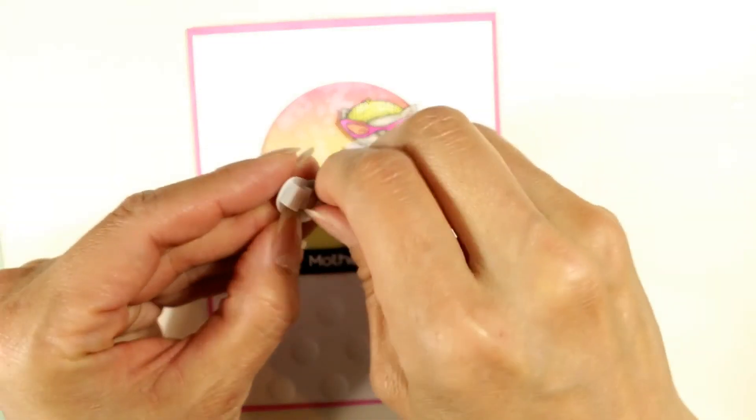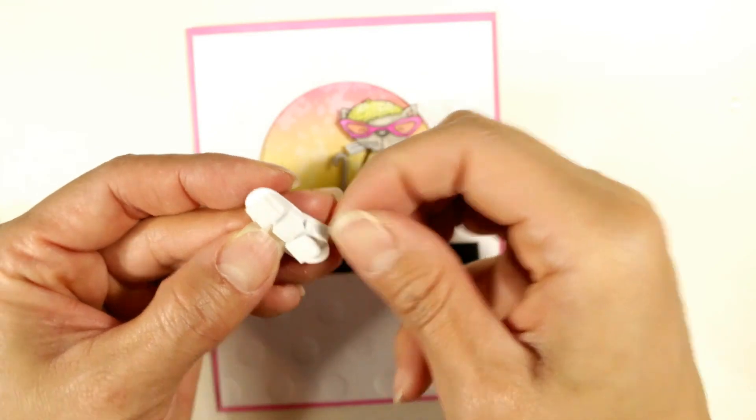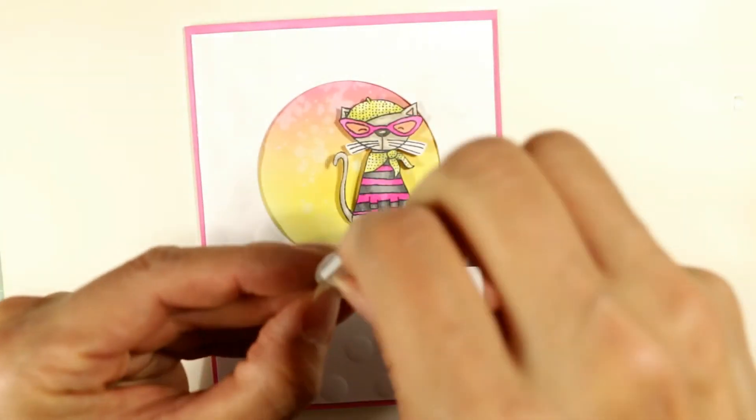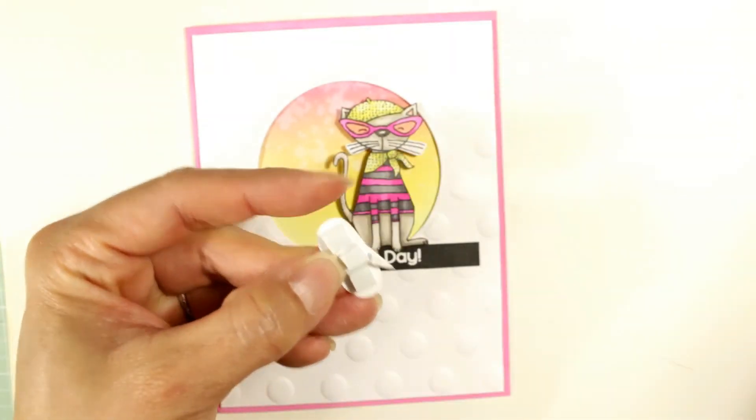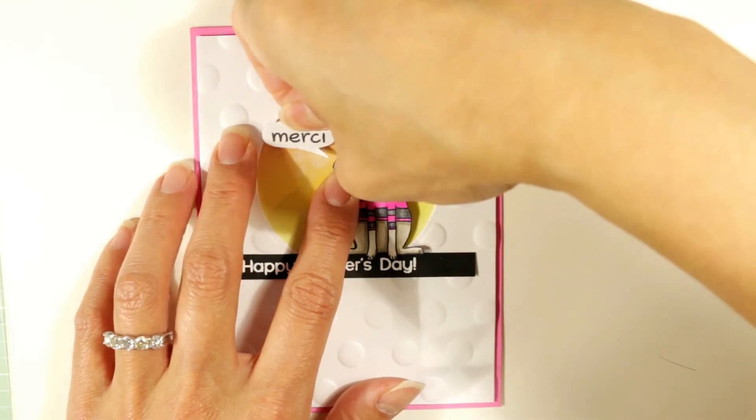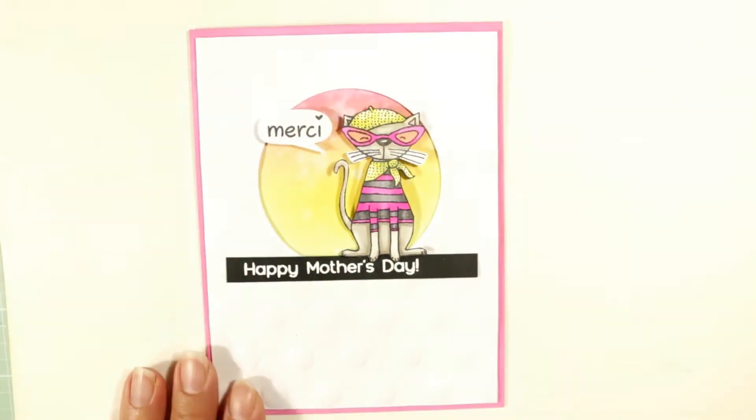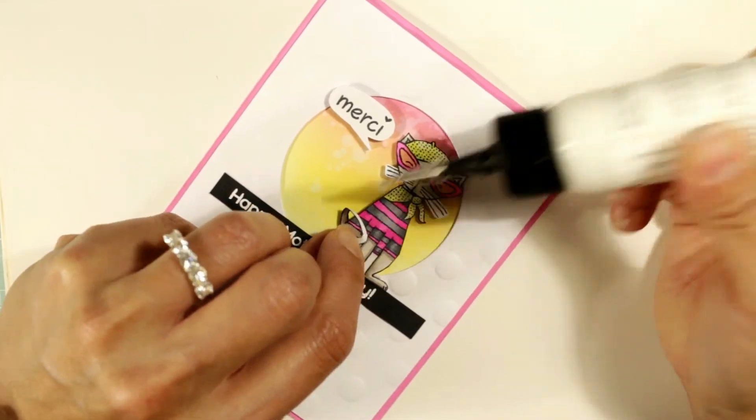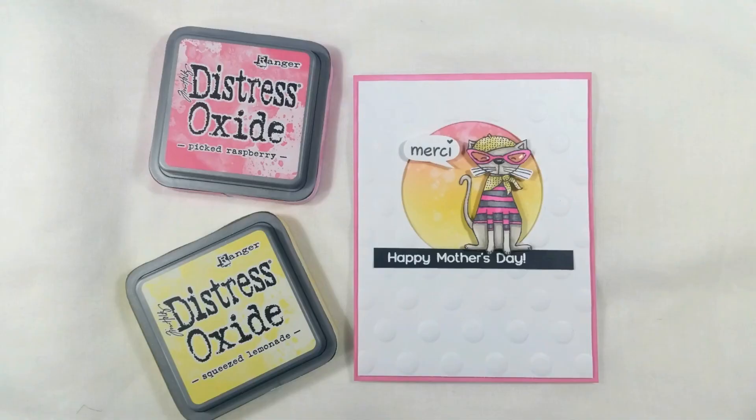I also stamped out off camera a little sentiment that says merci. It was an extra, I think that I got from Lawn Fawn ages ago and I just cut it out freehand, cut it out into like a little speech bubble that says merci like meow, but in French. And I just wanted to tack down the little kitty's tail. It was too thin to put foam adhesive behind it. And that's it.